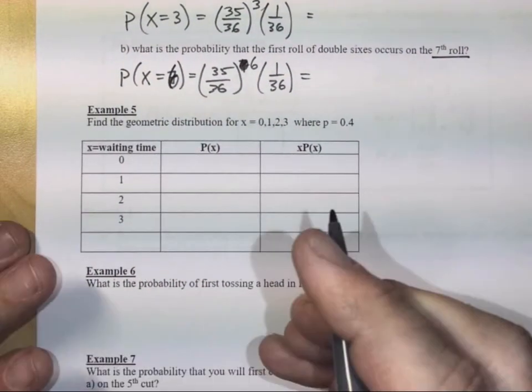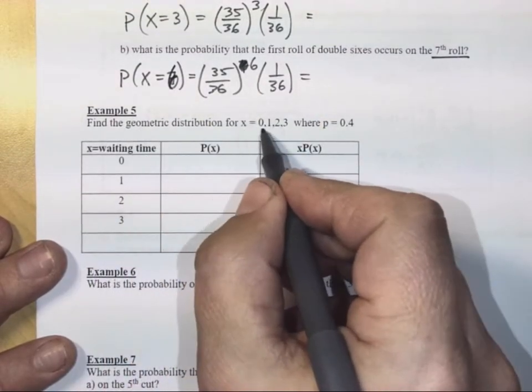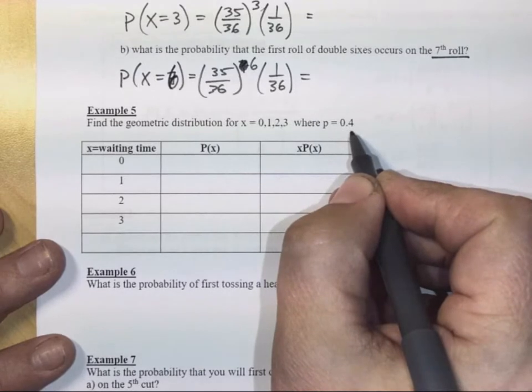Next example, number five. Find the geometric distribution for X equals 0, 1, 2, 3, where P is equal to 0.4.